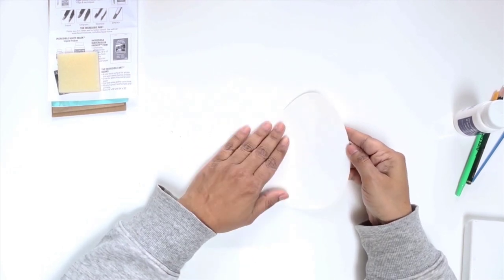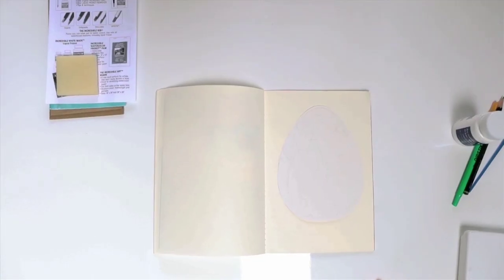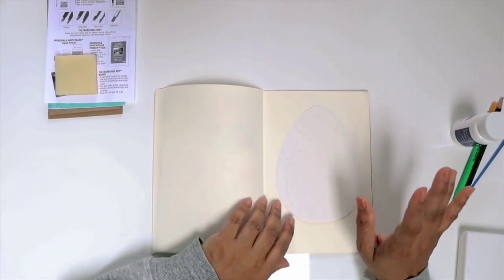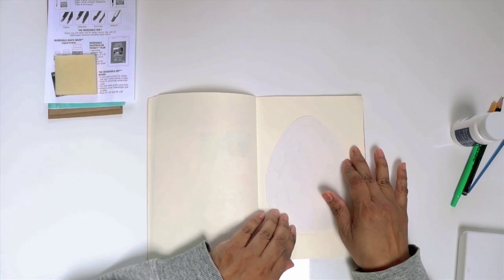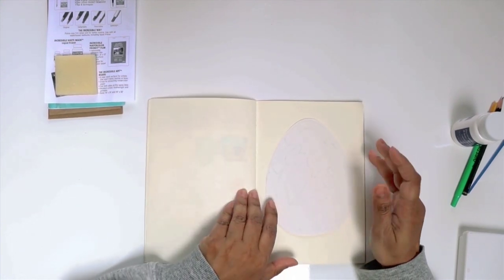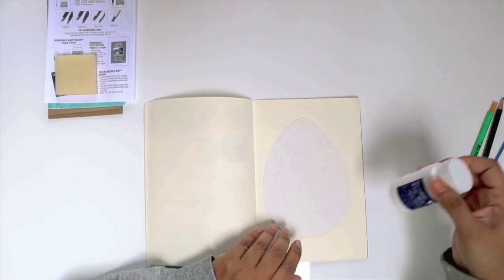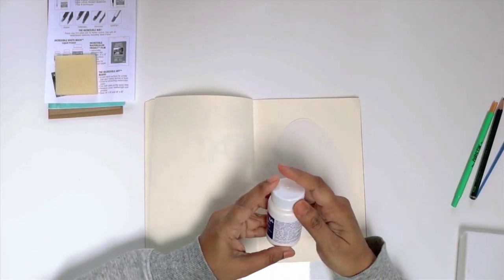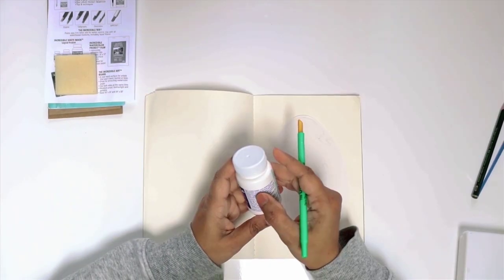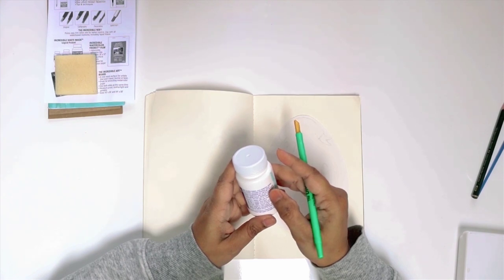You are going to see with me how it goes. I had to change the ISO setting on my camera to make sure that what I'm doing is actually visible. So I am taking my liquid frisket. Let me read the directions. Always read directions.